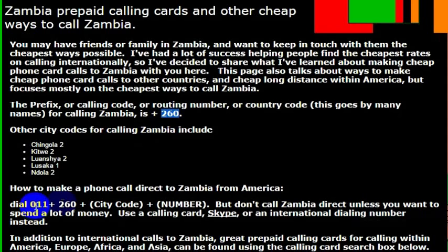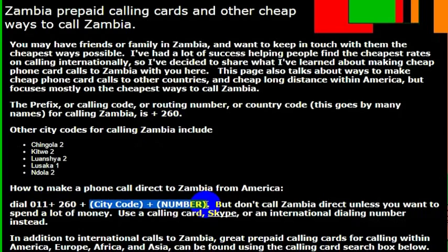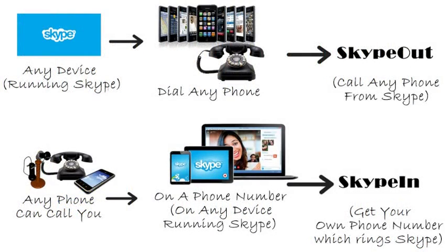To make that call, you would dial 011, which is the international dialing code for calling all international locations from the United States. Then you would dial 260, the country code for Zambia, and then you would dial the phone number you are trying to reach. So again, the country code for Zambia is 260.